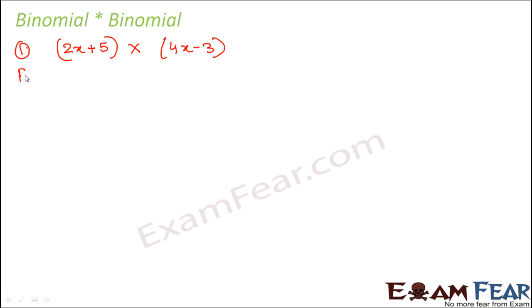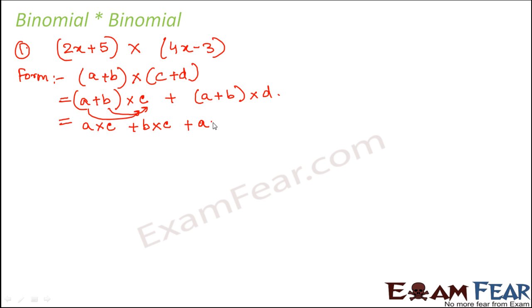If you look at the form of this expression, it is something like (a + b) multiplied by (c + d). This can be written as (a + b) × c plus (a + b) × d. By distributive property, this can be further written as a × c plus b × c plus a × d plus b × d. So this is how you can further break it down.